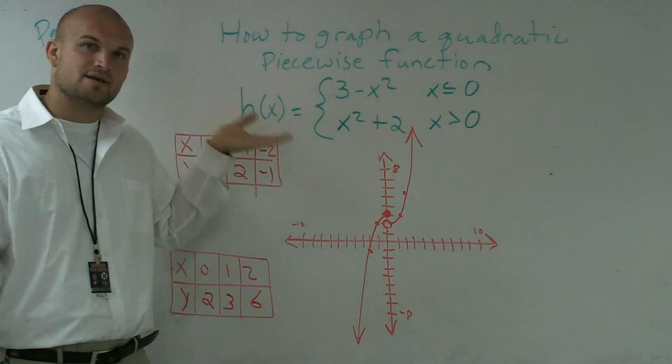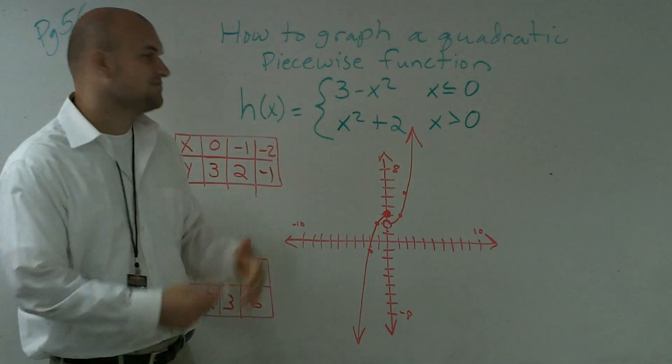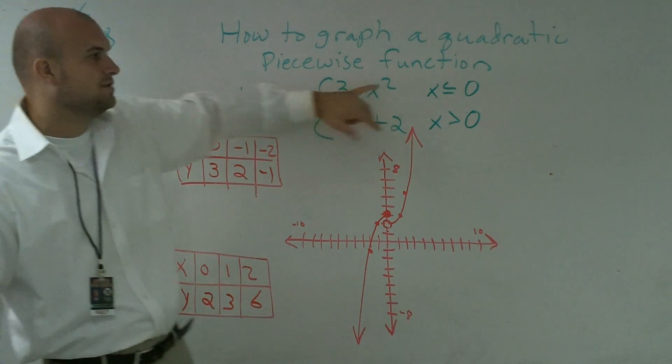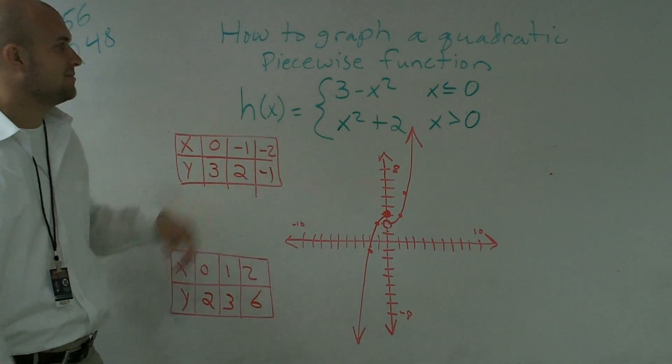So this is a general function. That's why they say just graph the function. But it is a piecewise function because we have two different functions. Within our function, we have two different functions that we're graphing with their given constraints. All right? So that is how you graph a quadratic piecewise function.